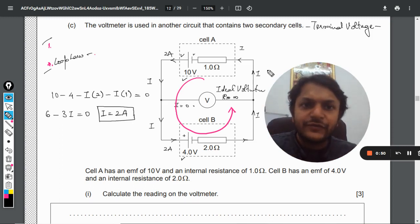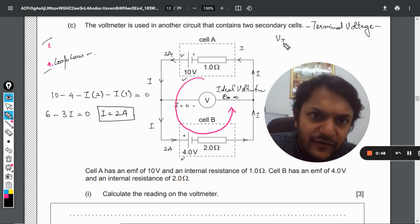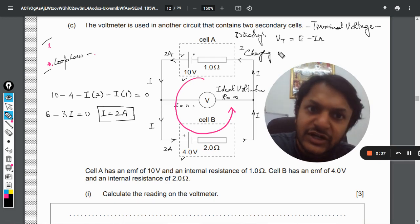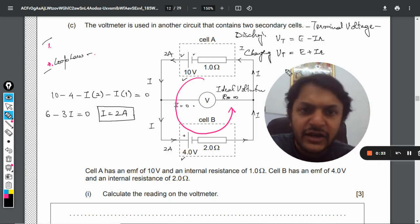So there are two formulas for this. First of all, if the battery is discharging, so Vt is equal to E minus IR. And if it is charging, there are two cases, so I am giving you both of the formulas, that is E plus IR.